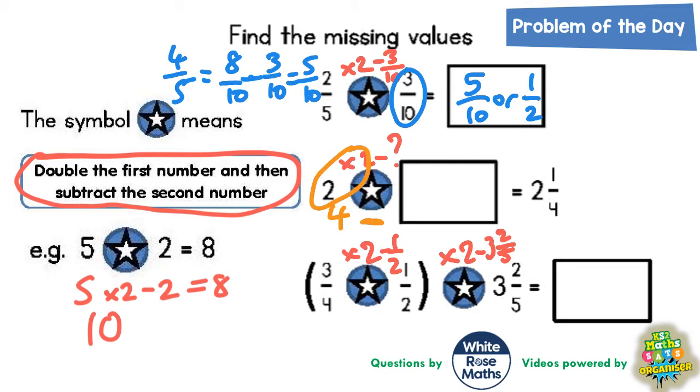Well if you take away 1 whole 1, 4 take away 1 would be 3 but we need to get down from 3 down to 2 and a quarter. Now from 3 down to 2 and a quarter you would need to take away 1 whole 1 and 3 quarters.